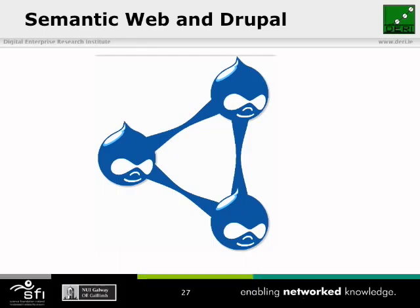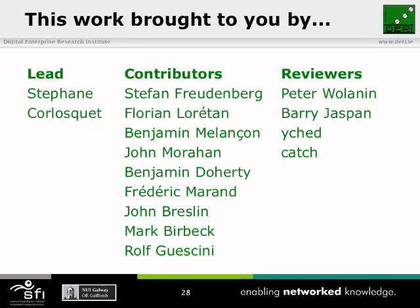Those are the features coming in Drupal 7 that will really help people link their sites to the semantic web. With these features, Drupal is becoming an excellent platform for the semantic web. I invite you all to download Drupal 7 and play around with it. If you find any issues, please post them. And if you want to get more involved, you can join us in trying to port those modules from Drupal 6 to Drupal 7 and implementing some of these new features.